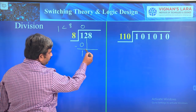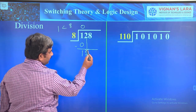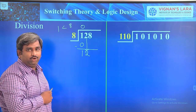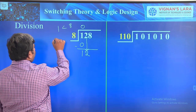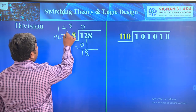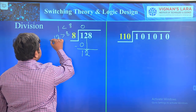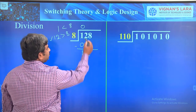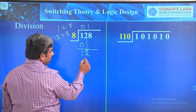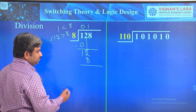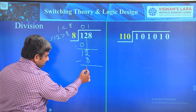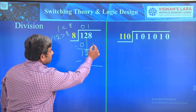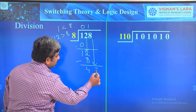Bring down the 2 to get 12. Now check whether 12 is divisible by 8. Since 12 is greater than 8, it is divisible. So 8 goes into 12 once — write 1 in the quotient and place 8 below. Subtract: 12 minus 8 equals 4.